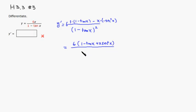Then the bottom is the same, so quantity 1 minus tangent of x squared.